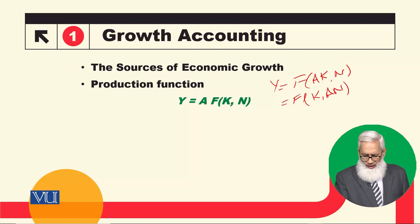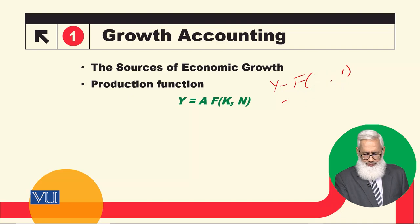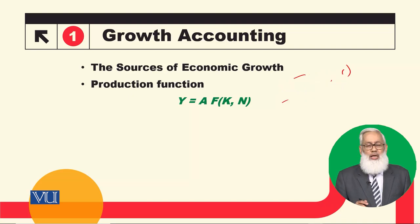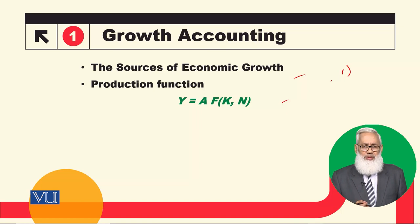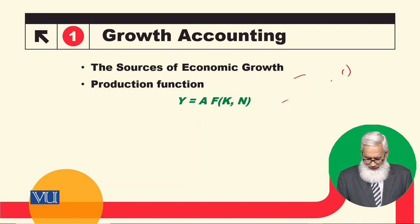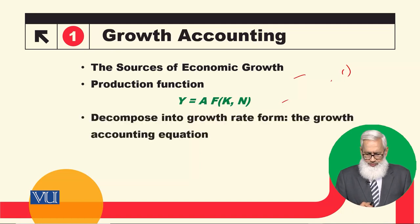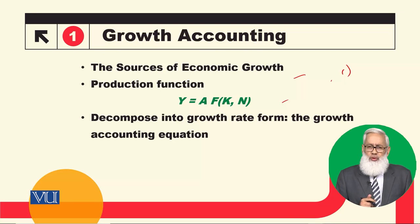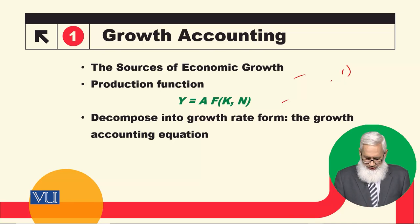This is the long-run production function, because we will talk about all variables — K is a variable, N is a variable. When we discuss the short run, we will fix K. So now we will talk about variables and growth rates.